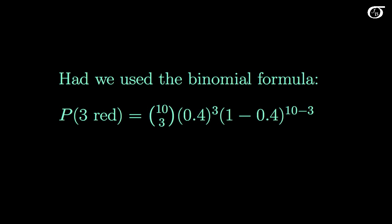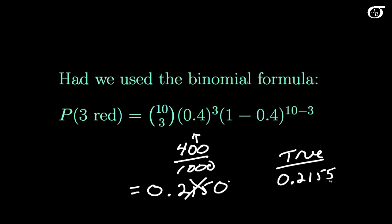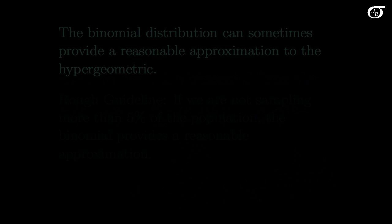What would happen if we just use the binomial formula instead? Let's just say the chance of getting a red marble is 400 over 1,000 or 0.4, and just use a regular old binomial formula, ignoring the fact we're doing it without replacement. If you put this into your calculator, you'll see that this is equal to 0.2150 rounded to 4 decimal places. Now that is not the correct probability. Recall when we used the hypergeometric distribution, we found the true probability of 0.2155. But wait a minute, this is pretty close to that. So calculating it with the binomial distribution in this setting got pretty close to the right answer.